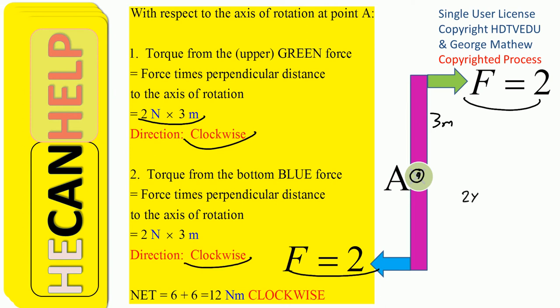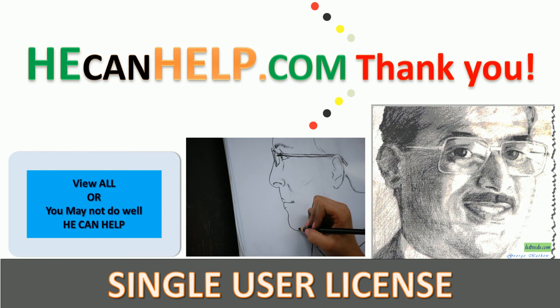So you have 2 times 3 plus 2 times 3, and they are both clockwise. So what do we get? 12 newton-meters clockwise. This is George Math — good luck!